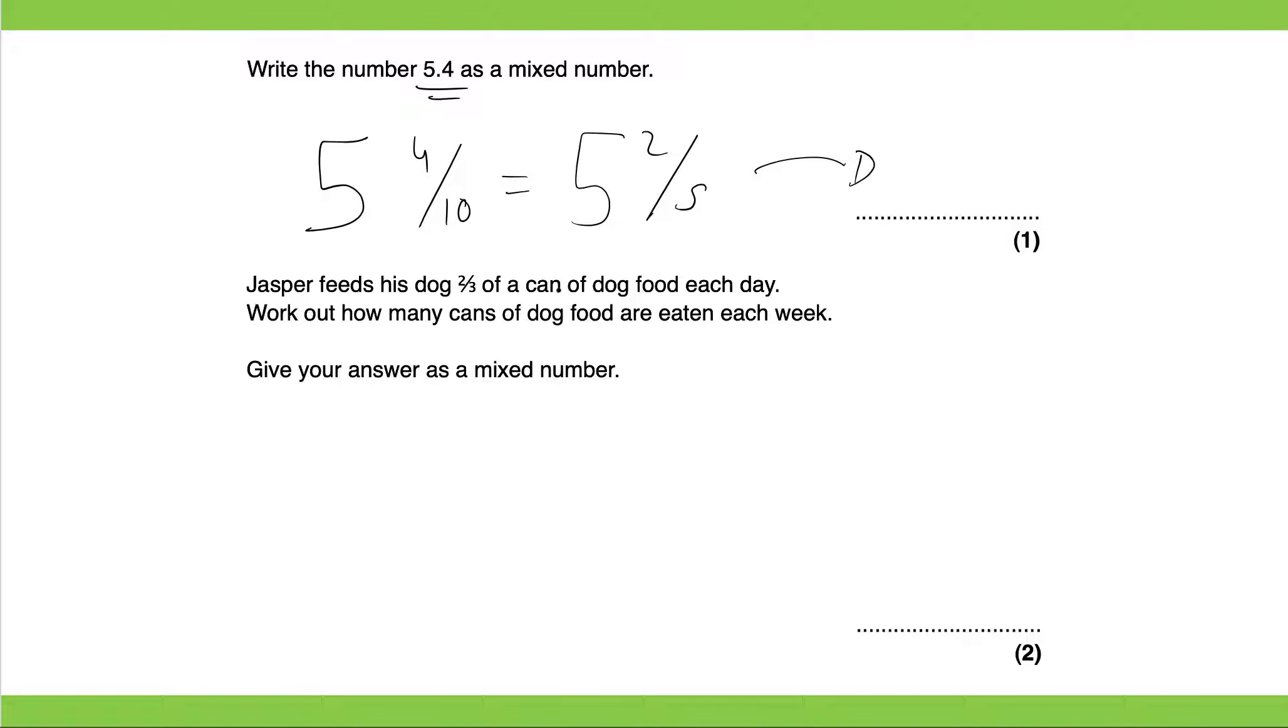So if two thirds are finished every day, how many cans are going to be eaten in each week? So that's going to be 7 days. So you're going to work out two thirds multiplied by 7. Remember 7 is nothing but 7 over 1. So it would be 14 over 3.